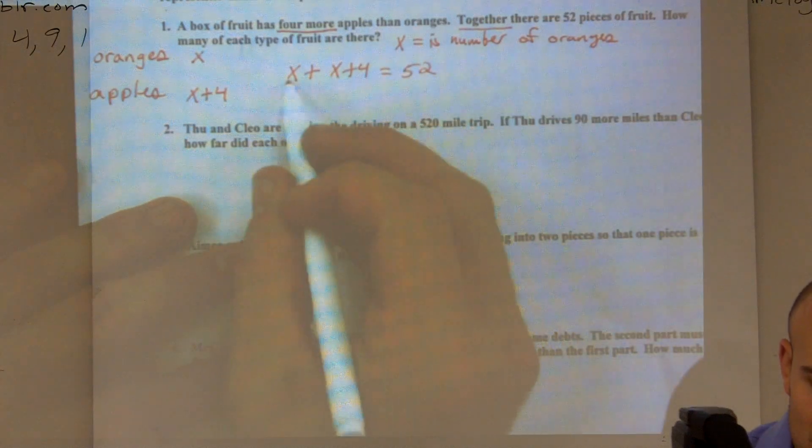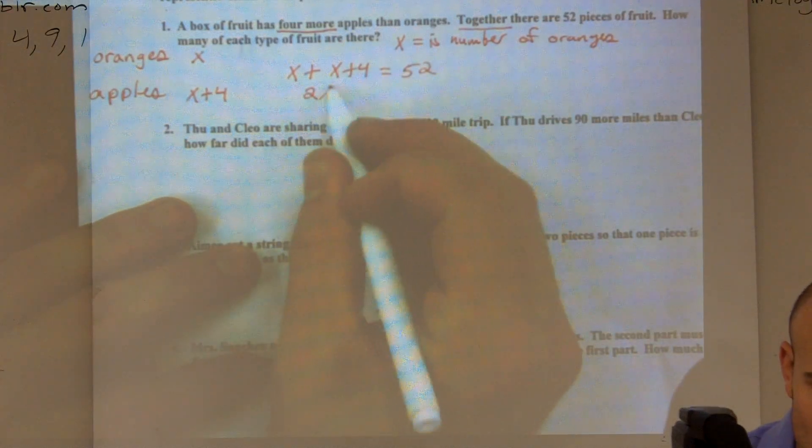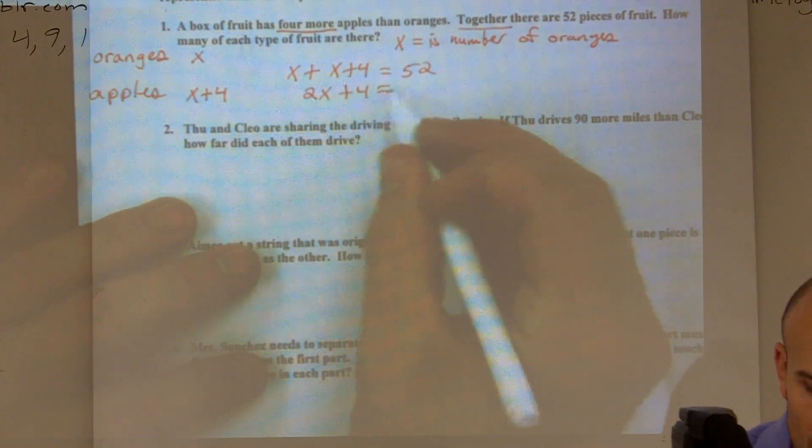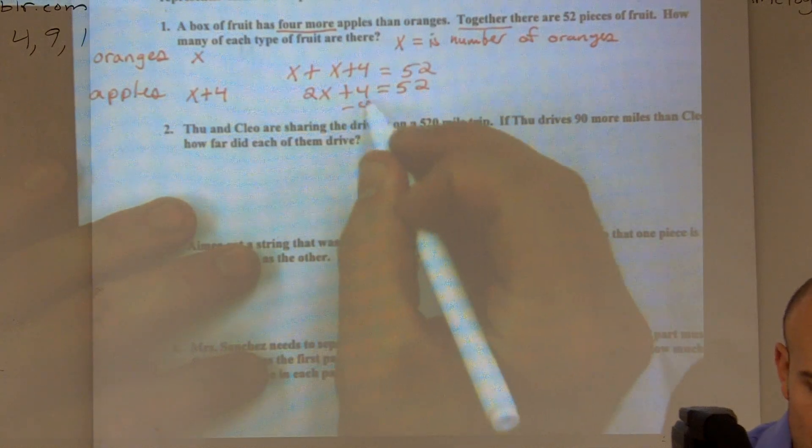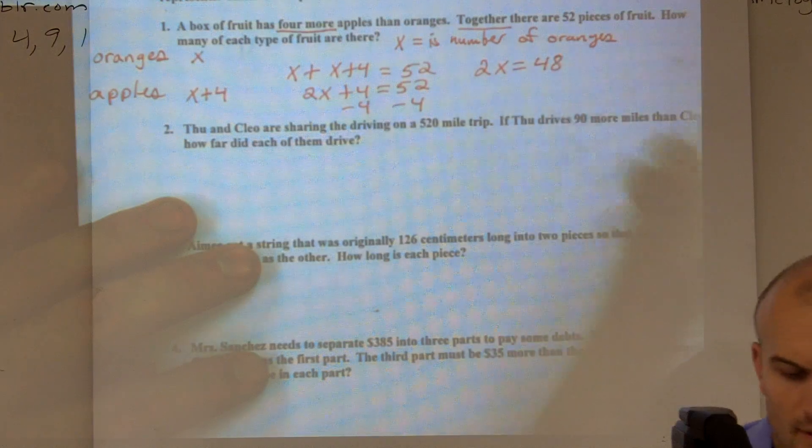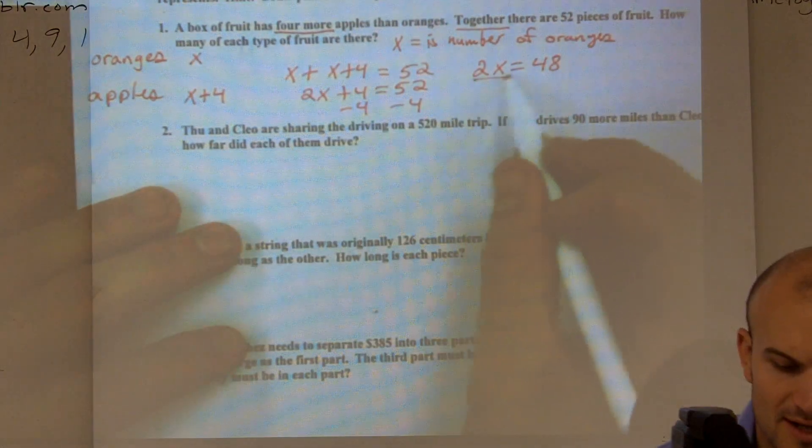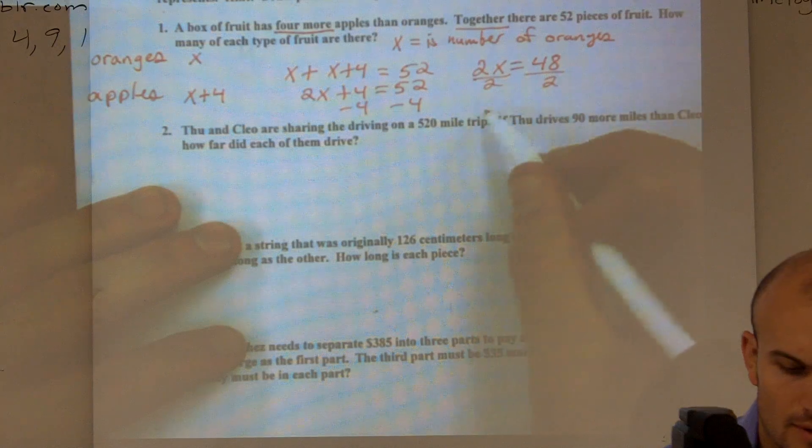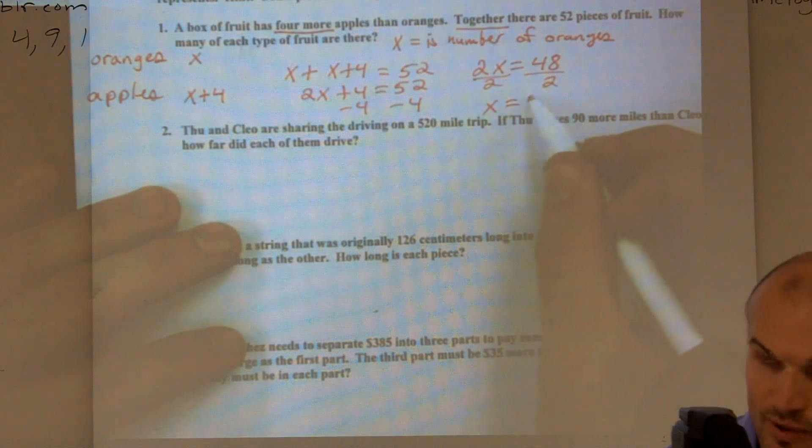I combine my like terms, my x and my x, which gives me 2x plus four equals 52. Subtract the four on both sides, and I get 2x is equal to 48. All right, and now I'm going to divide by two. x is equal to 24.